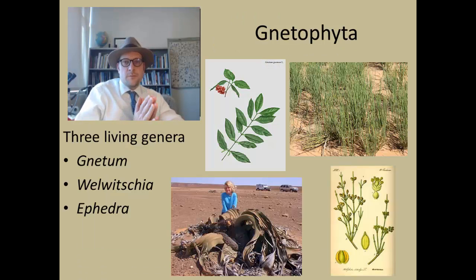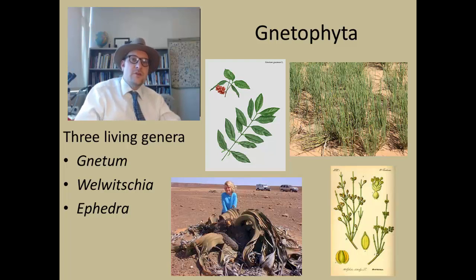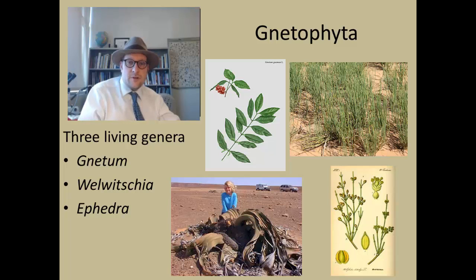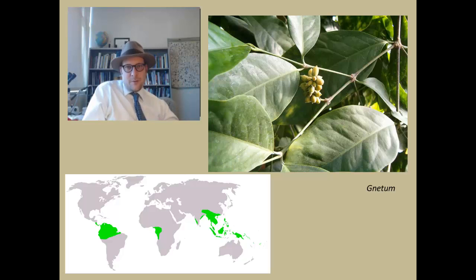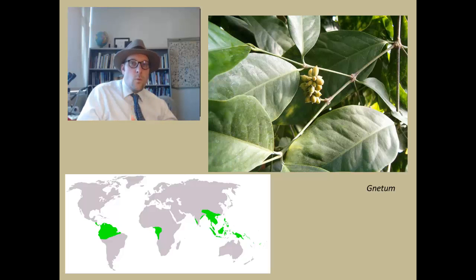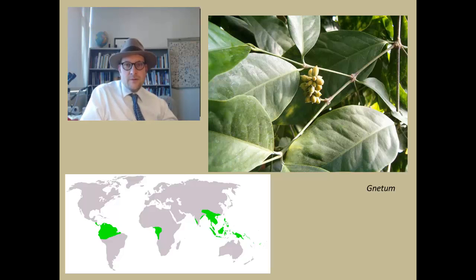The next group of gymnosperms we will examine are the strange and bizarre Gnetophyta, which today are represented by three genera: Gnetum, Welwitschia, and Ephedra. Gnetum is a broadleaf gymnosperm found in tropical jungles and forests of northern South America, the Congo Basin, and Southeast Asia. They live in wet climates that never freeze. The plant is an evergreen tree that never loses its leaves, and it produces pollen and small cones rather than flowers, although some insects have been implicated in pollination.